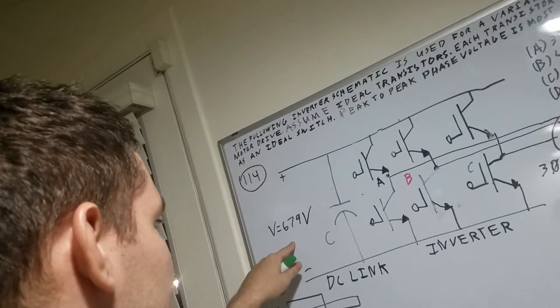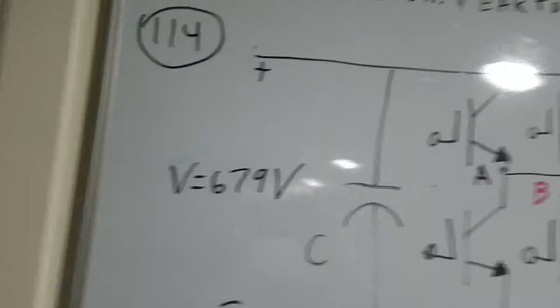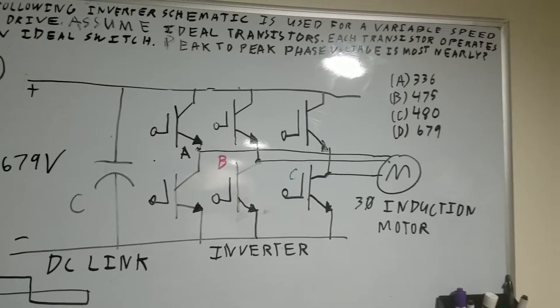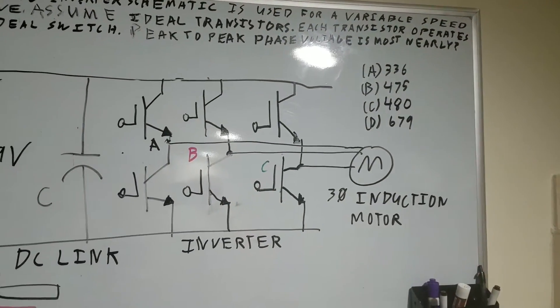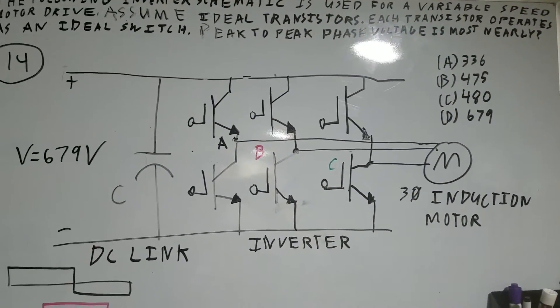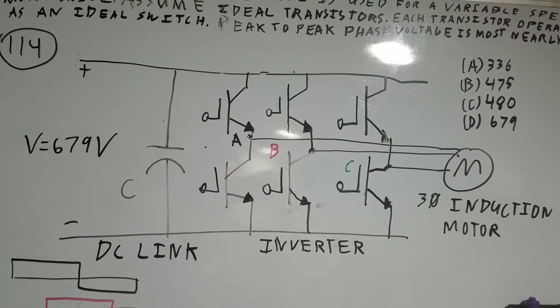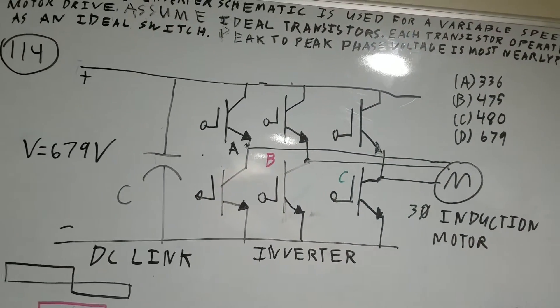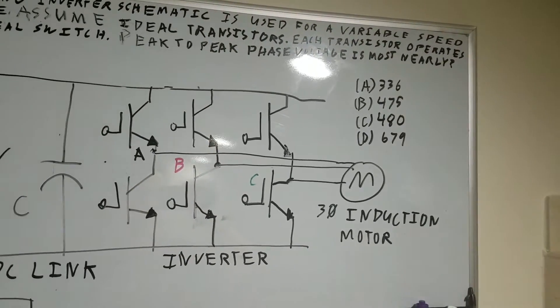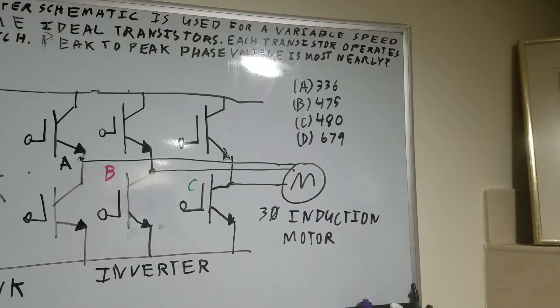So, over here you have a 679 volt supply going into a DC link and then into the inverter to convert the current from one phase DC into three phases of AC power to run that three phase induction motor.